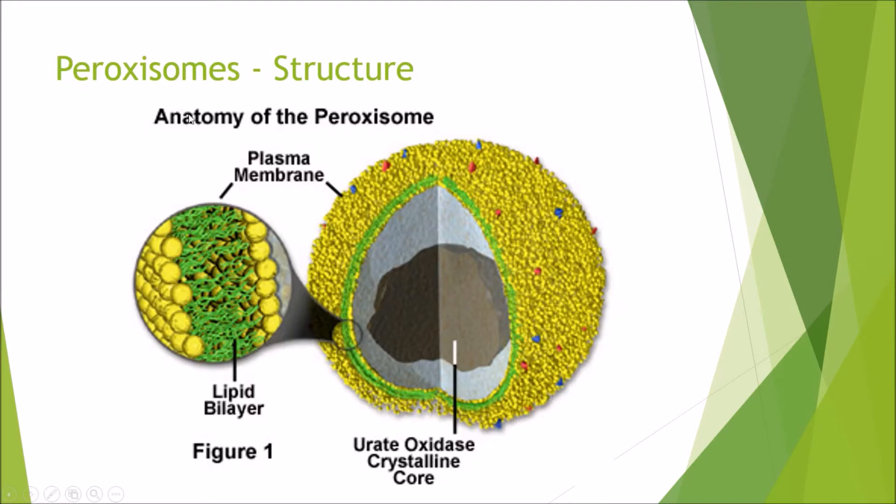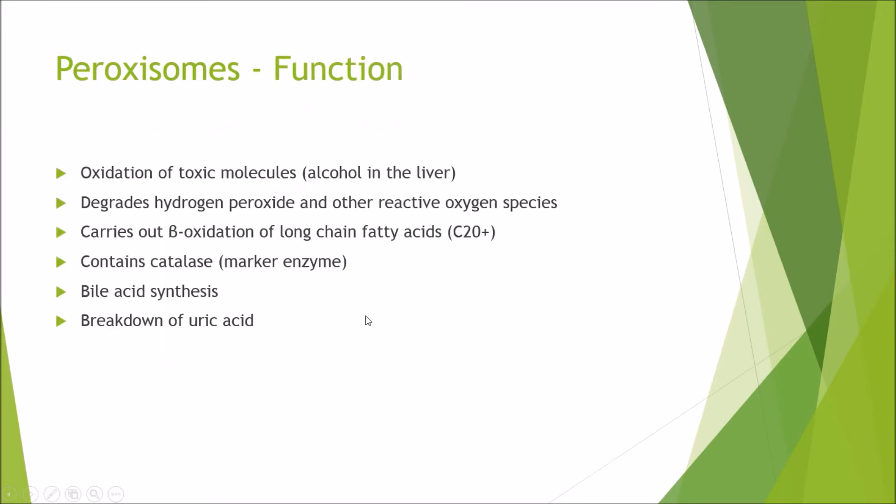And finally we have the peroxisomes. So the peroxisomes are similar to a lysosome in structure where it is a vesicle, and within it we have more catalytic enzymes. So the peroxisomes are required for oxidation of toxic molecules. So for example, in the liver there are a high number of peroxisomes when it is dealing with alcohol. It degrades hydrogen peroxide and other reactive oxygen species. So for example, when we are respiring we will get some free oxygen radicals, and the job of the peroxisomes is to neutralize these and to eliminate these. For these free radicals could react via DNA, change the structure of our DNA, cause mutations, and can therefore turn cancerous. It is also the site of beta oxidation of long chain fatty acids only if they have a carbon chain of 20+. It also contains catalase, which is the marker enzyme specific to the peroxysome, and is also required for bile acid synthesis and the breakdown of uric acid.